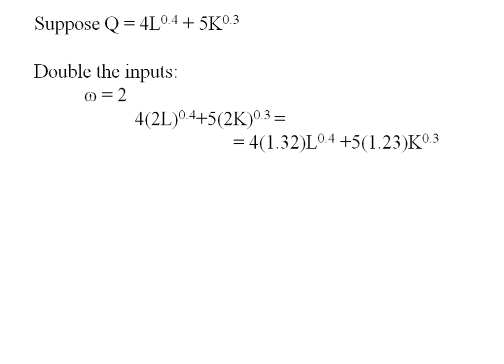Distributing the exponents. So the 4 gets copied out in front. And the 0.4 comes in on the 2 giving me 1.32 L to the 0.4. That 5 gets recopied. The 0.3 exponent comes in on the 2 giving me 1.23. And it comes in on the capital.